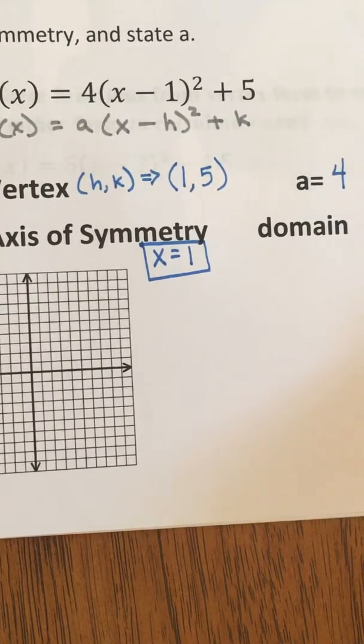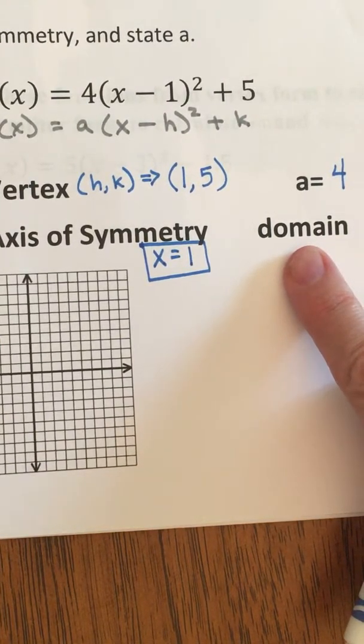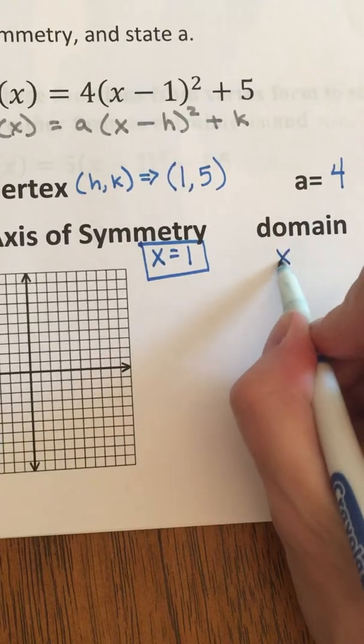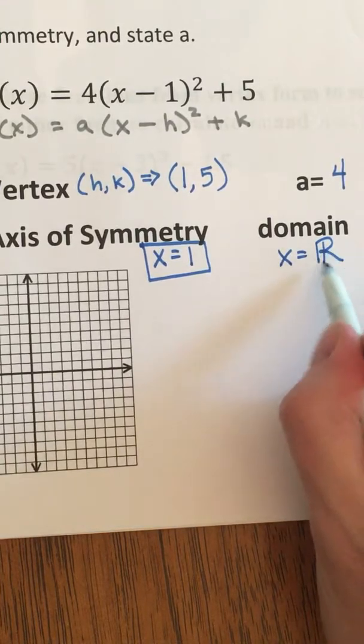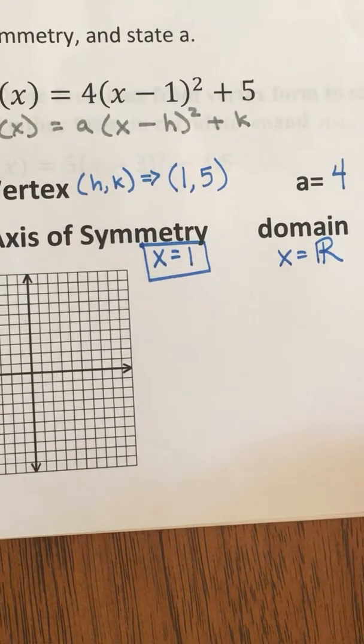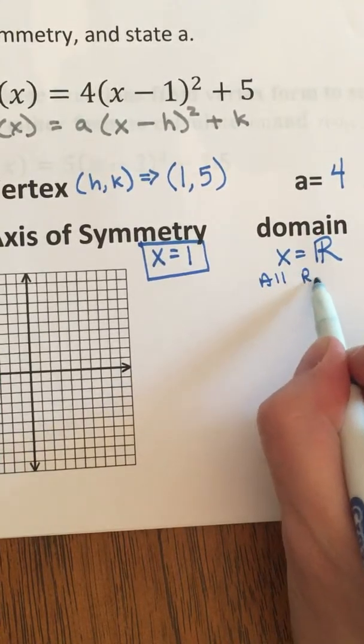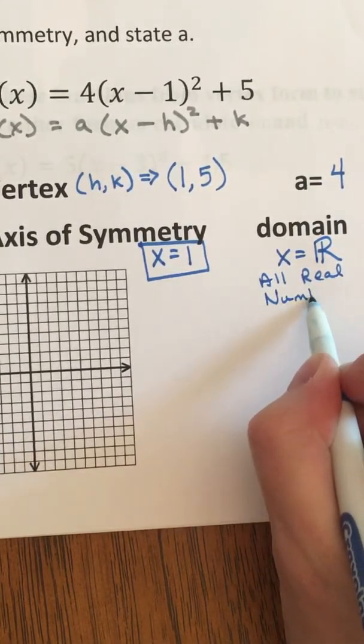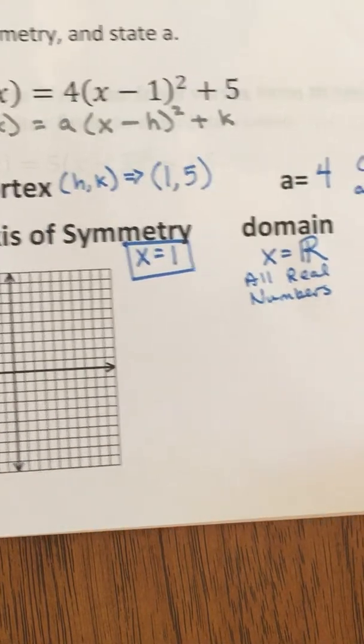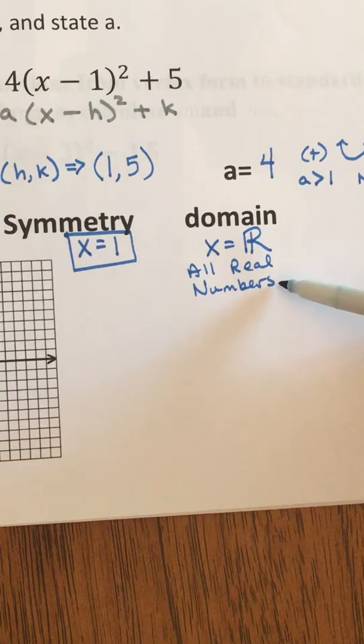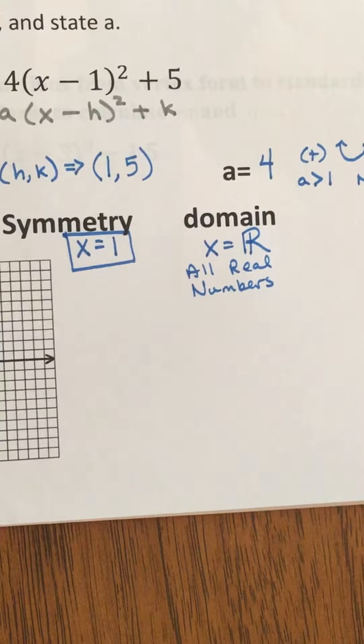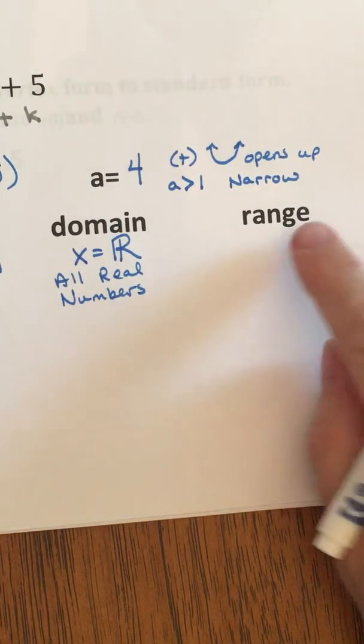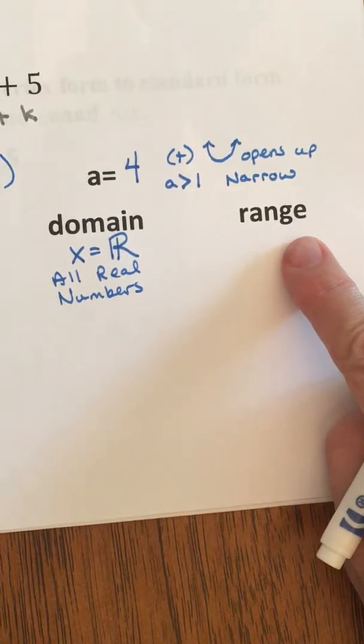Now, the domain. We talked in a previous lesson that every single one of these parabolas that we are discussing in Algebra 1 will always have a domain that is equal to all real numbers. And that symbol of the double-barred fancy R is shorthand for all real numbers. Sometimes, if you're on a multiple-choice problem, they might have the phrase or they might have the symbol. You just have to be ready for either one.